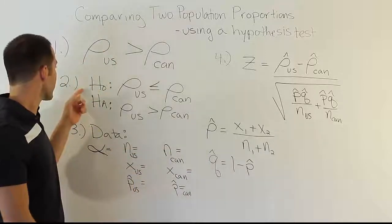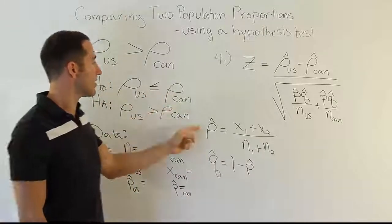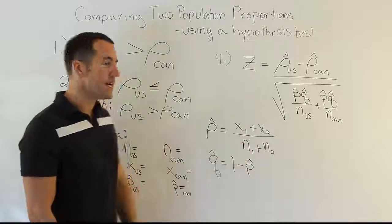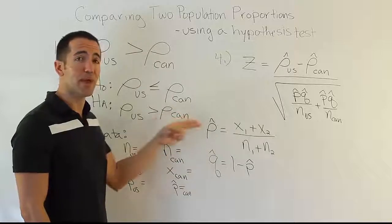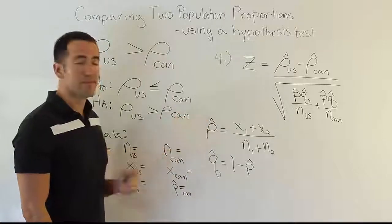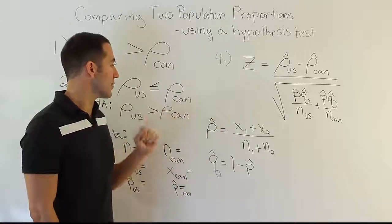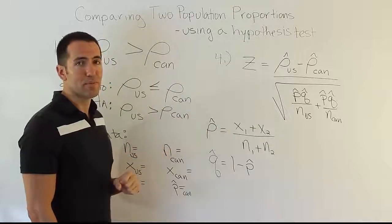but just remember that under H0, we're going to assume that they are the same, and if that's the case, we should pool this estimator. Kind of like we did when we did the independent t-test, and we assumed the variations were the same. We found a pooled estimate of the variation. So it's the same kind of thing. We're going to do that here with the sample proportion instead.